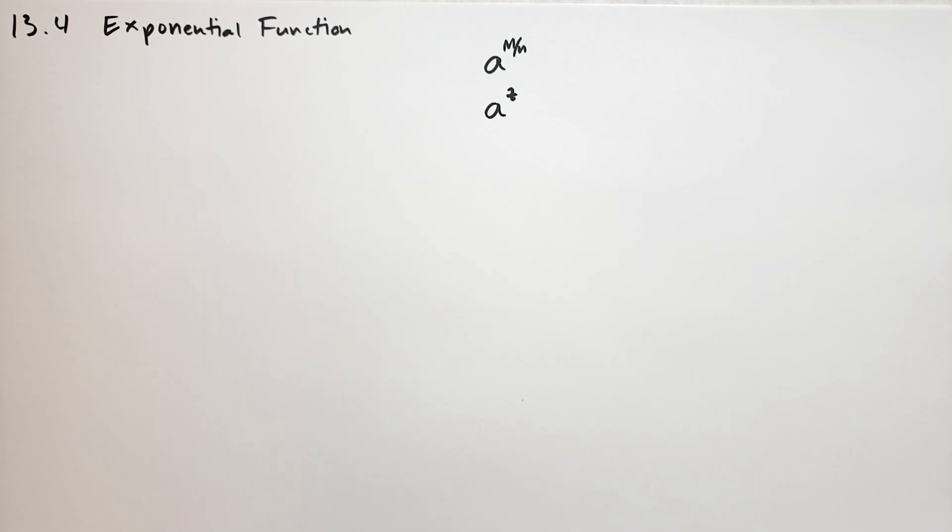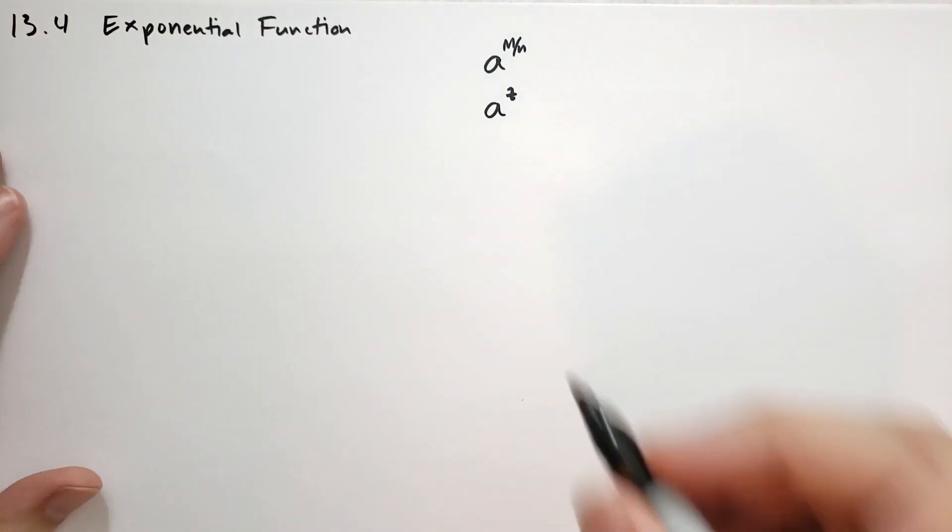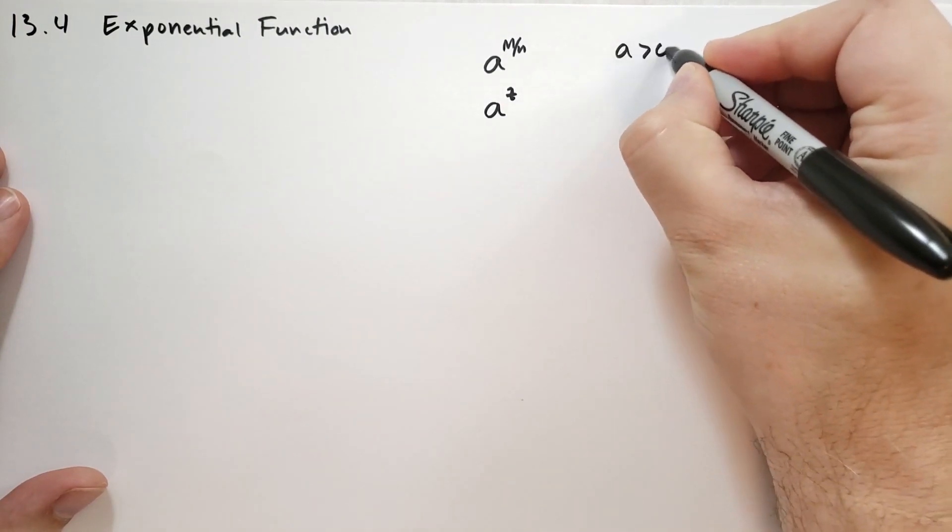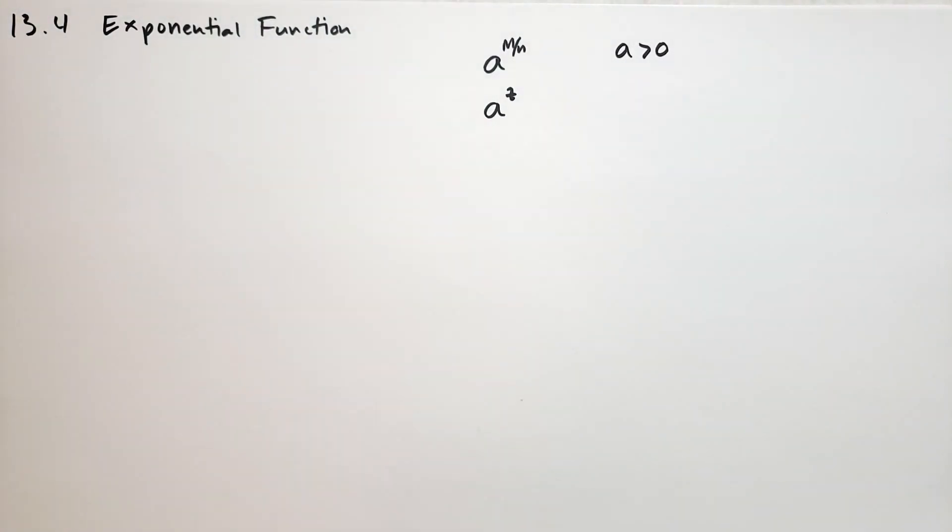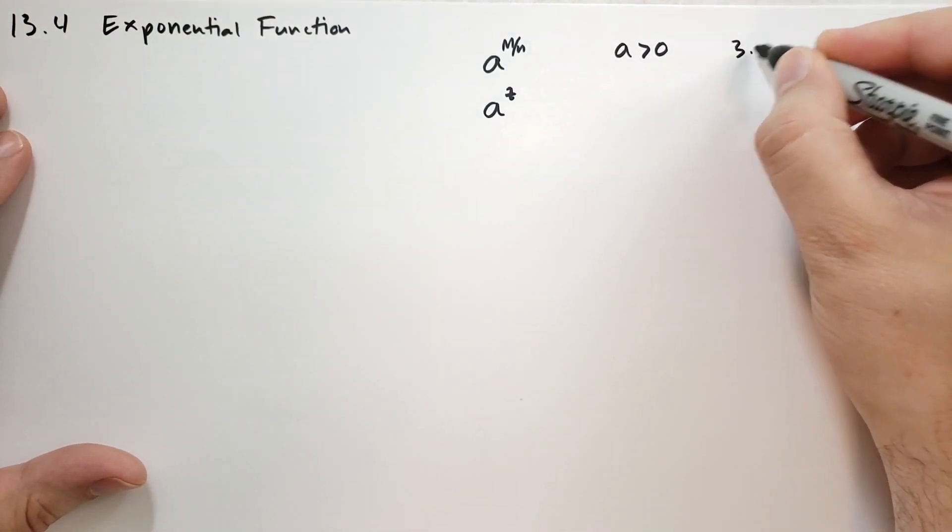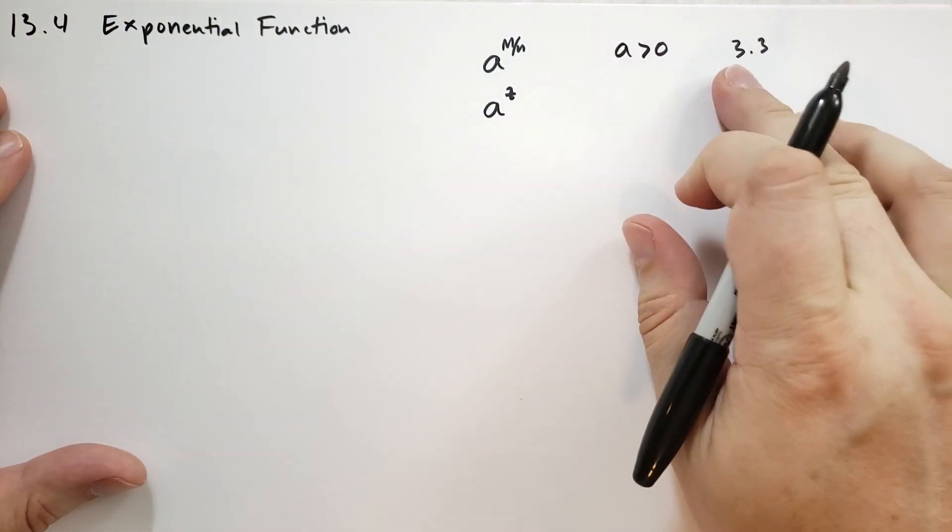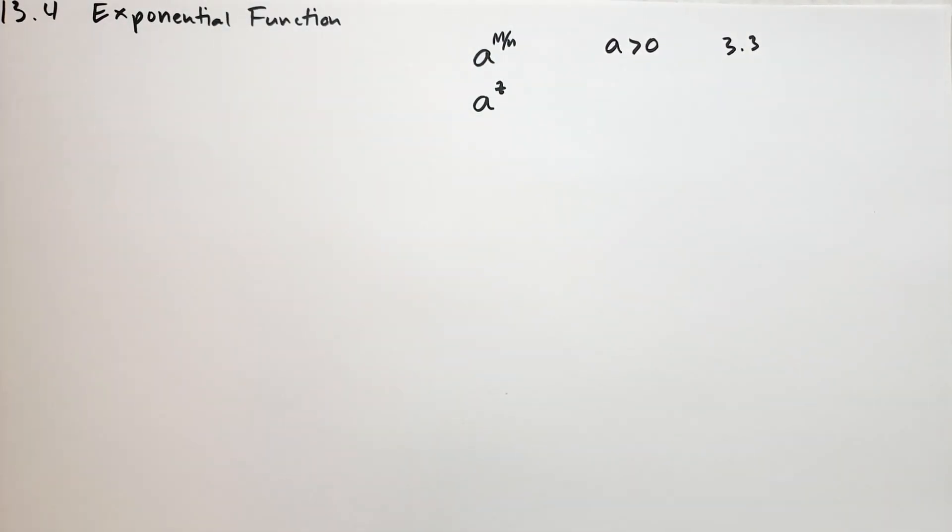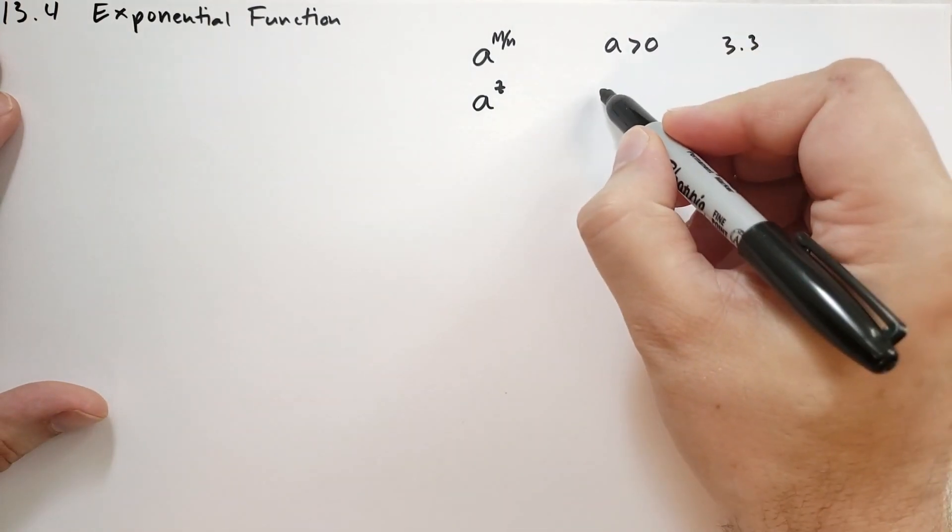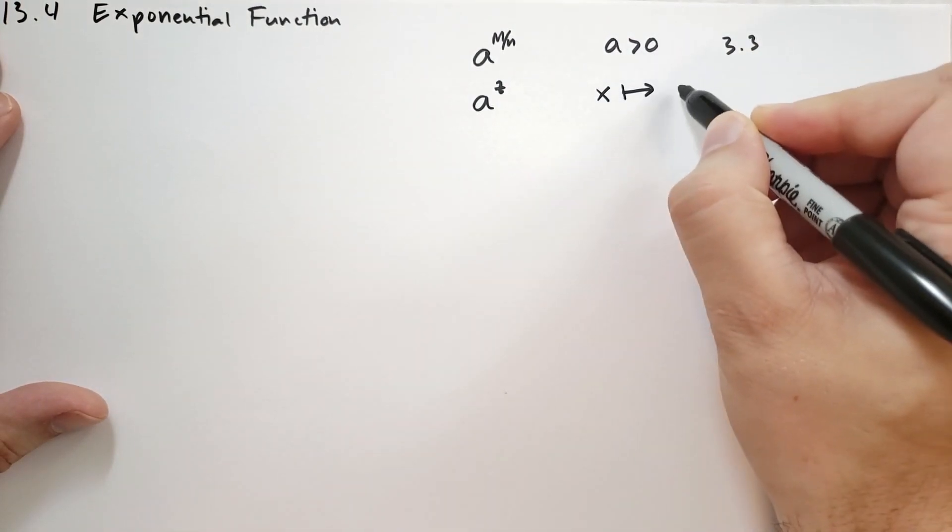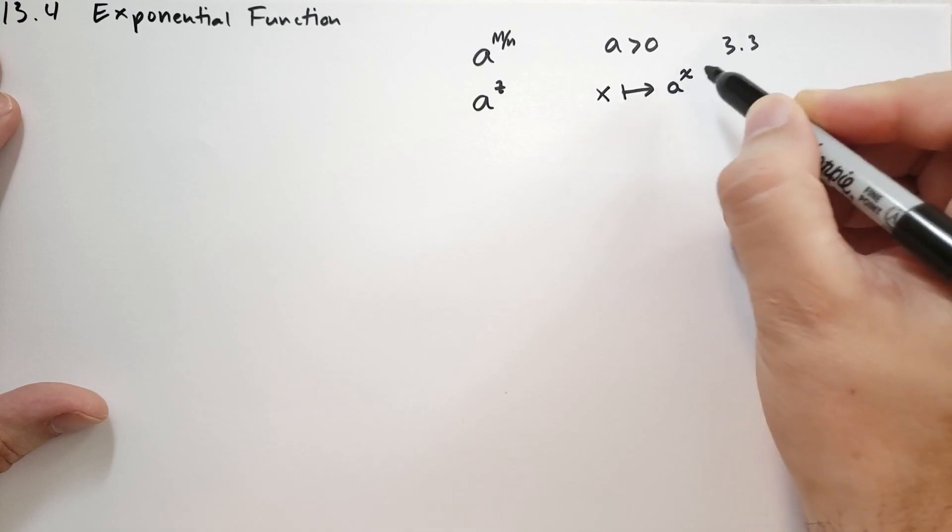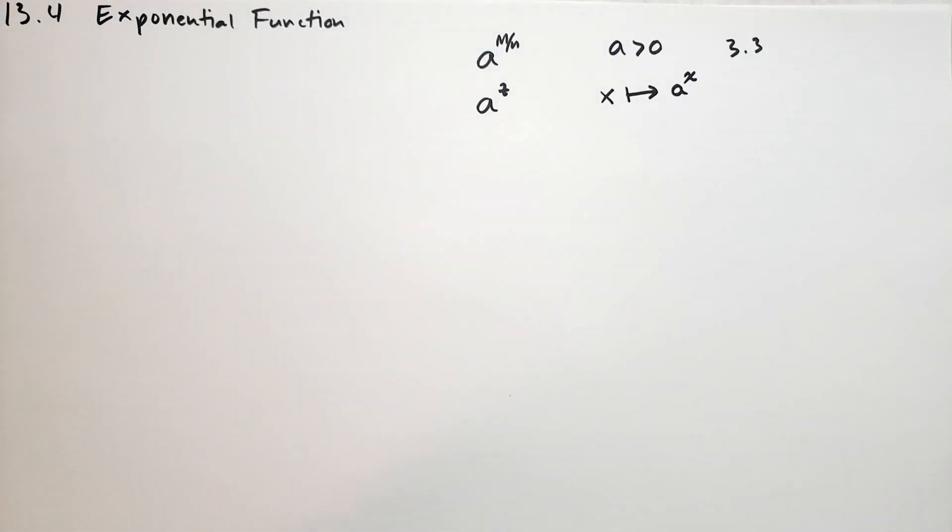For the first thing we're going to do, we're going to consider when a is greater than 0. And we know that as long as n does not equal 0, we can go back to chapter 3, section 3, and review what happens when we take exponents of fractions. So let's consider the formula, the function that takes x and maps it to a to the x power for all real numbers.